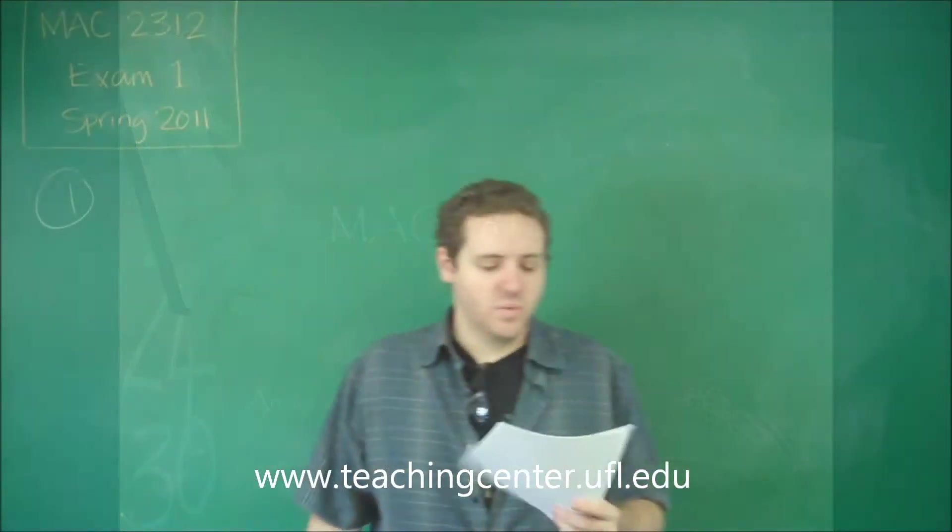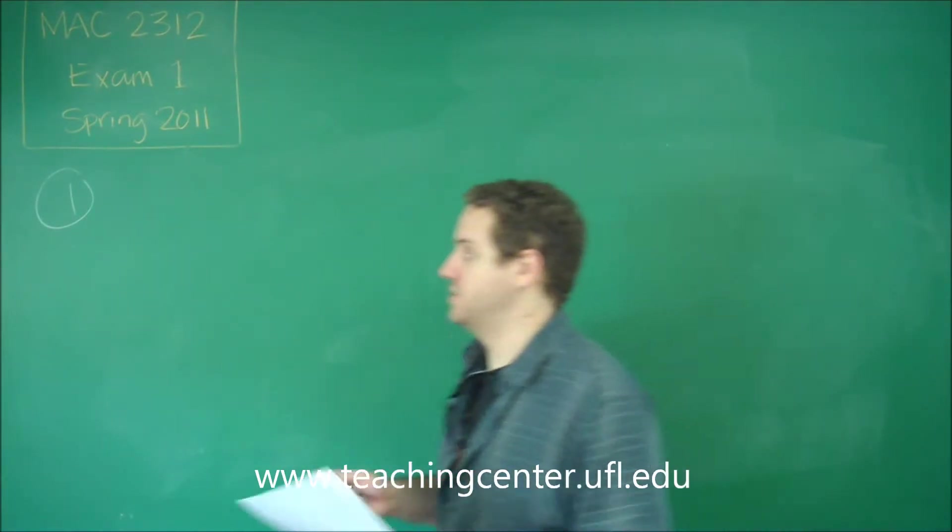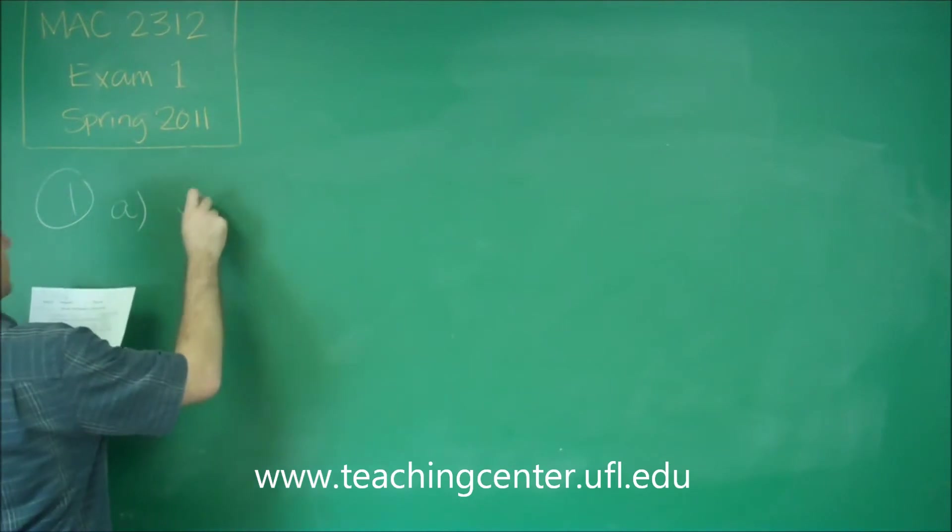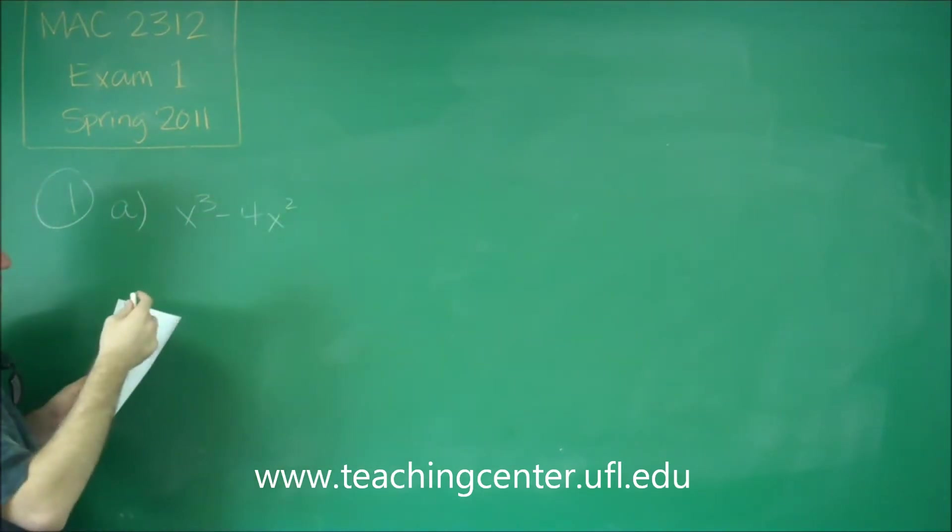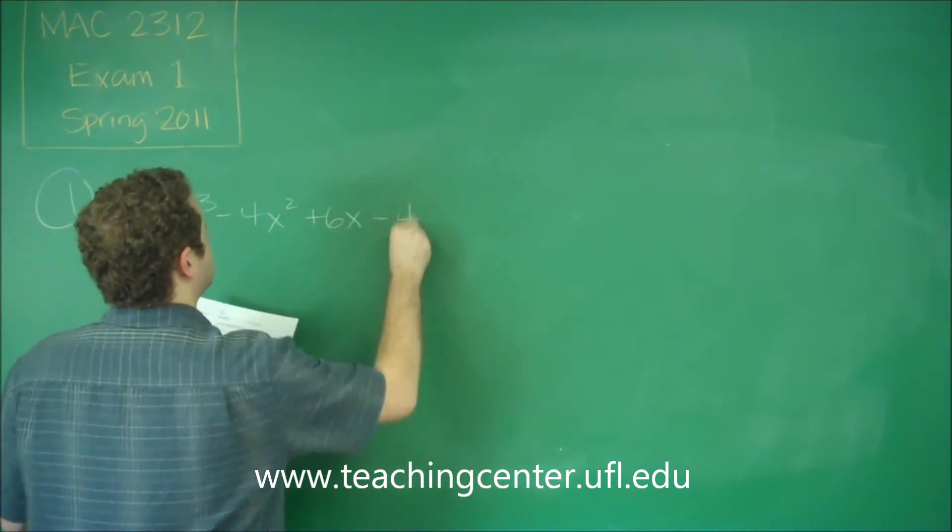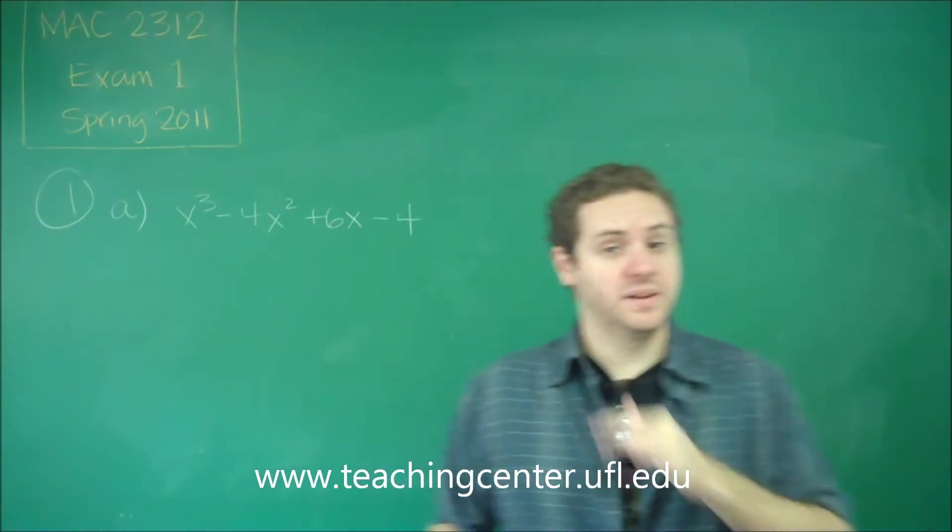So for number 1a, we need to just factor a cubic equation. So remember that when you're factoring a cubic, such as this one, we have x cubed minus 4x squared plus 6x minus 4. Your objective at first should always be to see if you can factor it by grouping, because that would be the easiest.